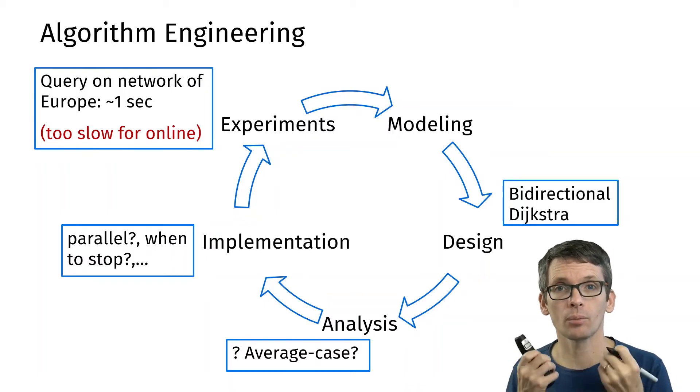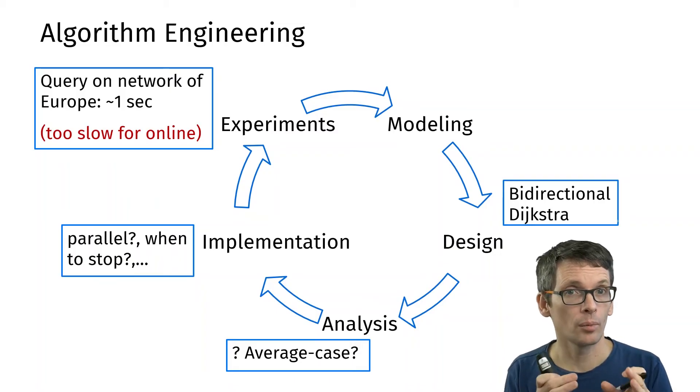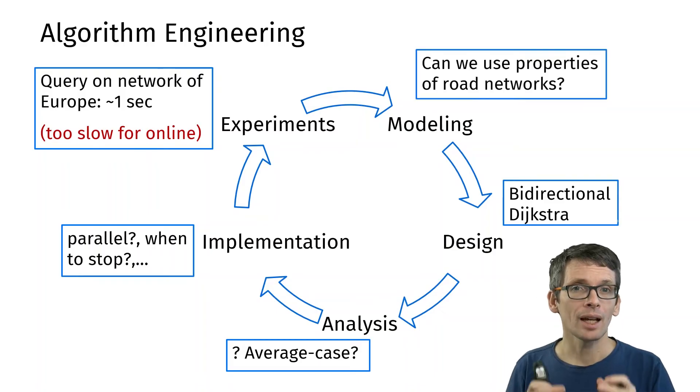We have to bring in additional ideas and those will now come from the modeling because so far we didn't really use that we have a street network. Are there properties of the street network that we could use to make our algorithms faster?